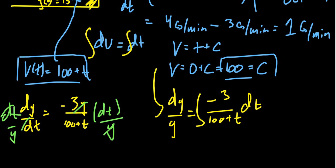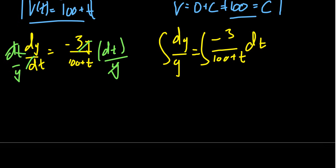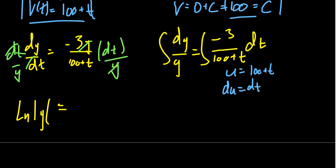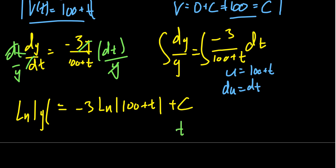Integrate both sides. The left-hand side becomes the natural log of the absolute value of y. For the right-hand side, you may need a u-substitution with u = 100 + t, du = dt, which gives negative 3 times the natural log of |100 + t| plus a constant. Since t ≥ 0 and y can never be negative, we can drop the absolute values without issue.